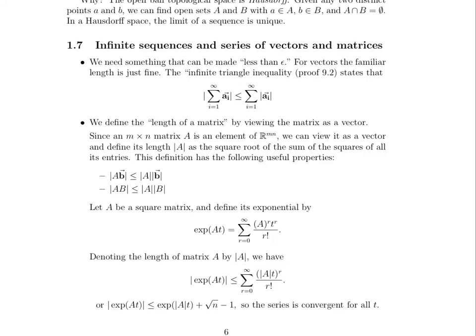So this definition has the following useful properties. The length of the resultant vector when a matrix A acts on a vector B is going to be less than or equal to the length of the matrix A times the length of the vector B. Similarly, if you have two different matrices, A and B, the length of their product is going to be less than or equal to the length of the matrix A times the length of the matrix B.